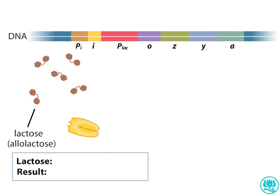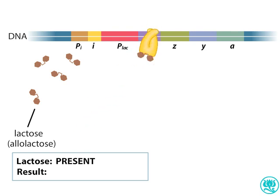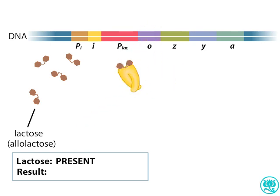When allolactose is present inside the cell, it binds to the lac repressor, causing the repressor to change shape. In this new conformation, the repressor can no longer bind to the lac operator site.